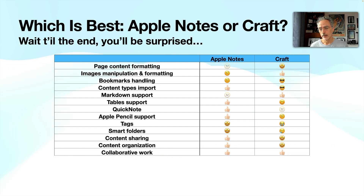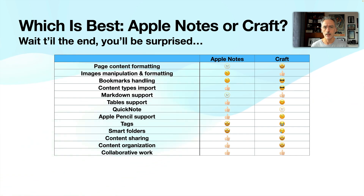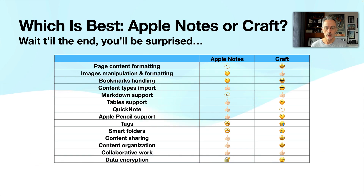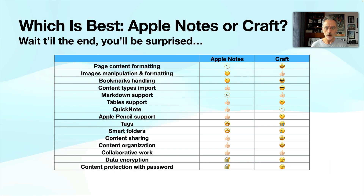For collaborative work, Kraft and Apple Notes are about the same — both support mentions and people can work together in the same document. I do prefer Apple Notes' implementation slightly, but both are pretty much equal. Data encryption is only available in Apple Notes, not yet in Kraft. Content protection with a password is also only supported in Apple Notes, so if security is important to you, Apple Notes is the answer.